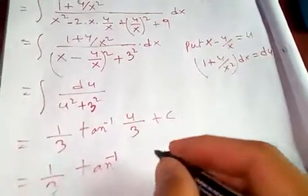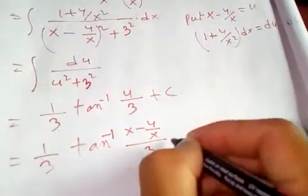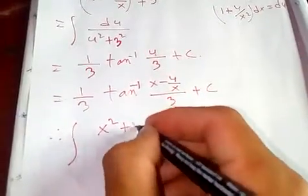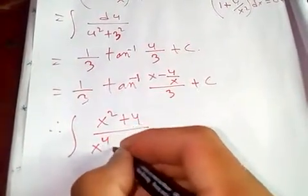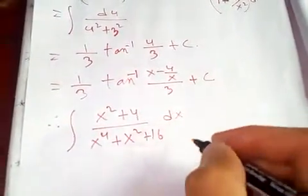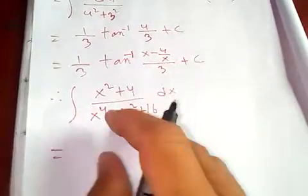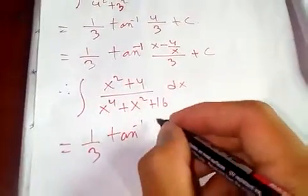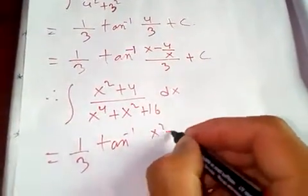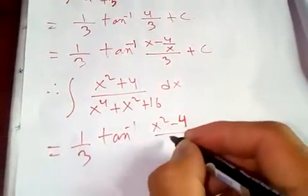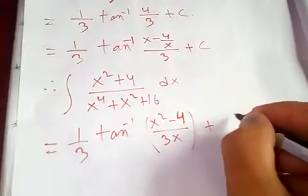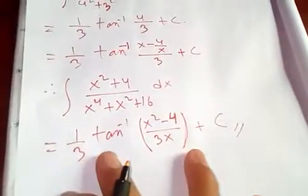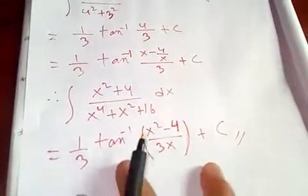So our integral of (x² + 4) over (x⁴ + x² + 16) dx equals (1/3) arctan of (x² - 4)/(3x), plus the constant of integration C. This is our required answer for this integral.